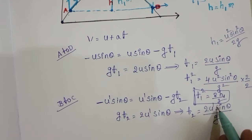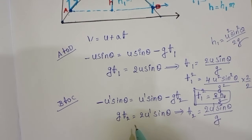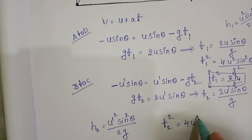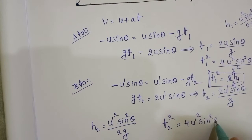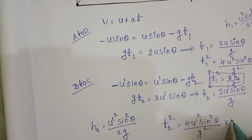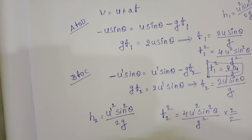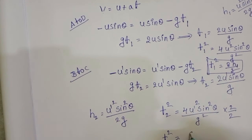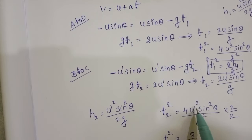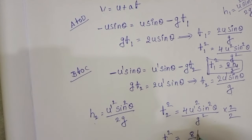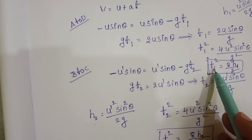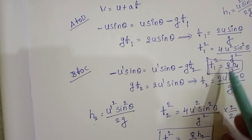Similarly, t2 equals 2u dash sin theta by g. Squaring: t2 squared equals 4u dash squared sin squared theta by g squared. Multiplying and dividing by 2, and substituting u dash squared sin squared theta by 2g equals h2, we get t2 squared equals 8h2 by g.